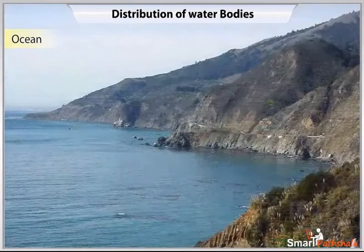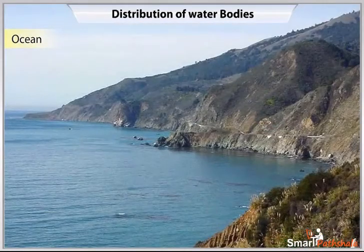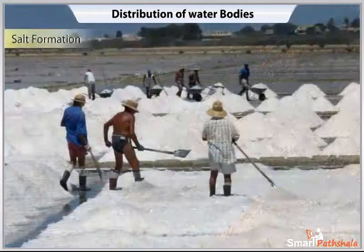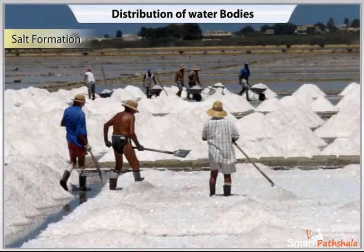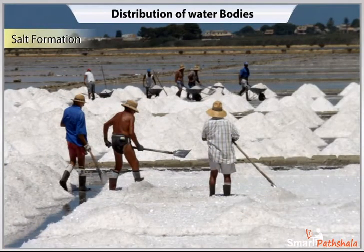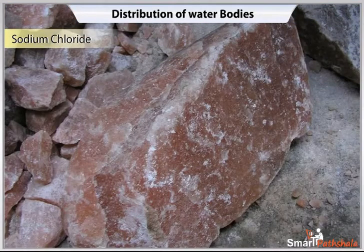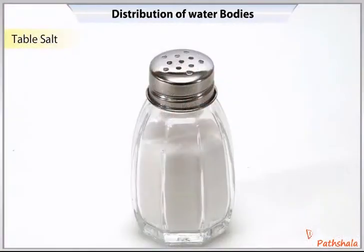The oceans and seas contain salty water. The water of the oceans is salty or saline as it contains a large amount of dissolved salts. Most of the salt is sodium chloride, or the common table salt that we eat.